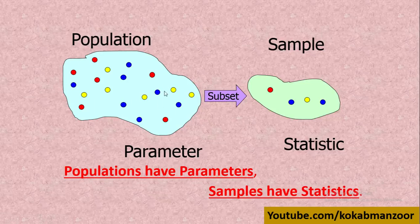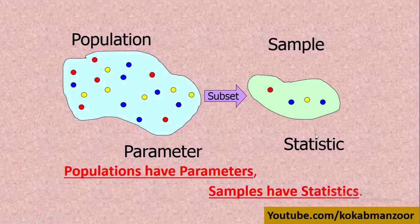Population is the large group — the universe of interest — from which the sample is drawn. A few elements are selected. In the representation you see red, blue, yellow and others. When you study the population, the result is called a parameter. When you study the sample unit in the same way, the result is called a statistic. The population mean is mu — that is the parameter — and the sample mean is x-bar — that is the statistic. Population has parameters; sample has statistics.